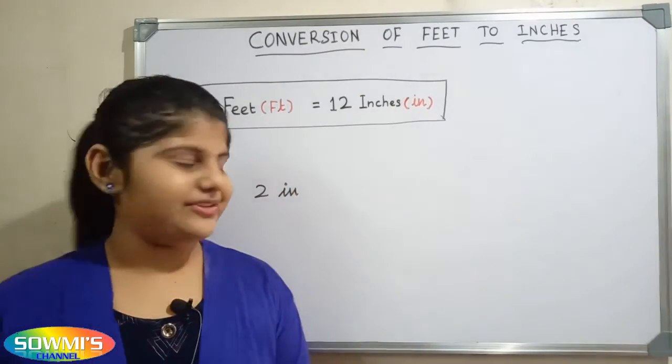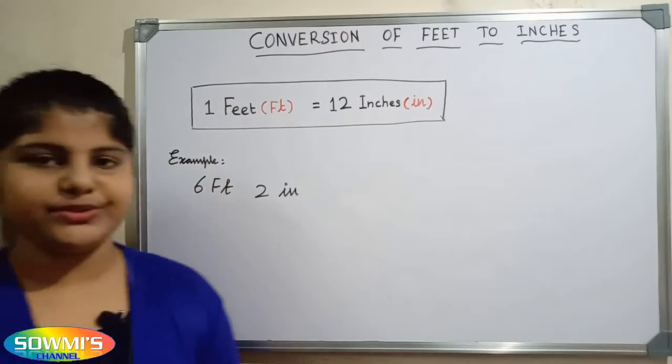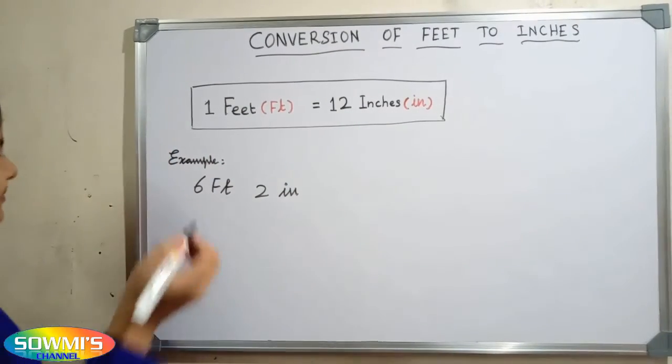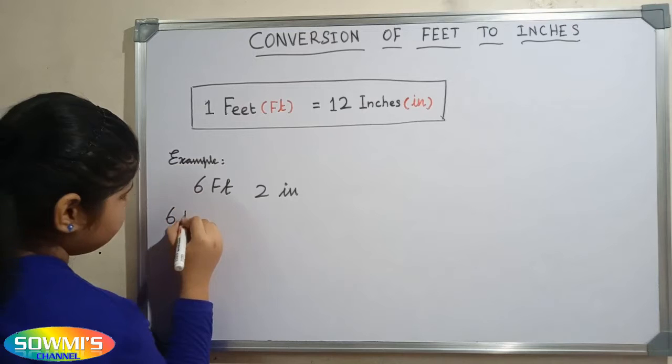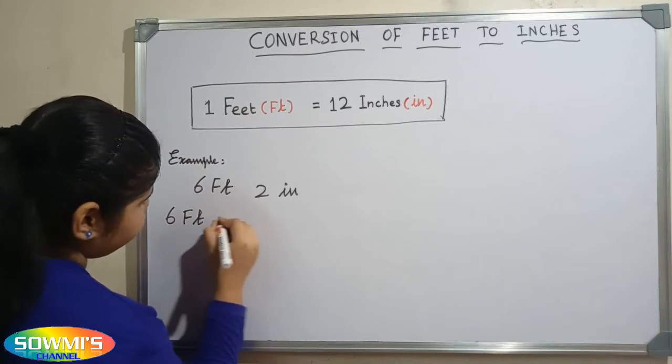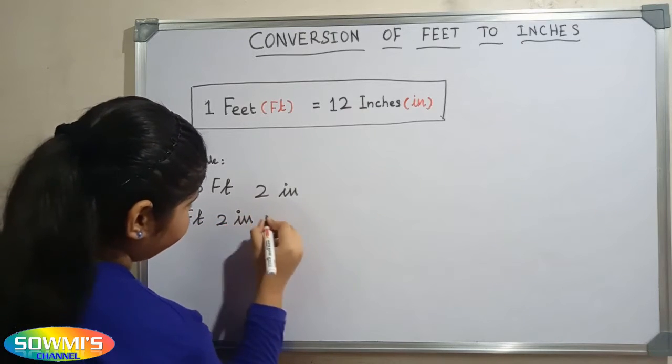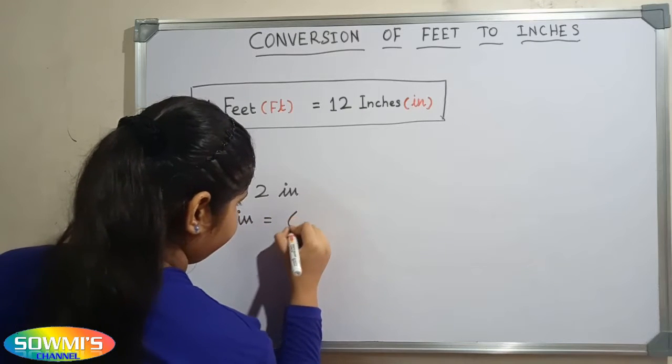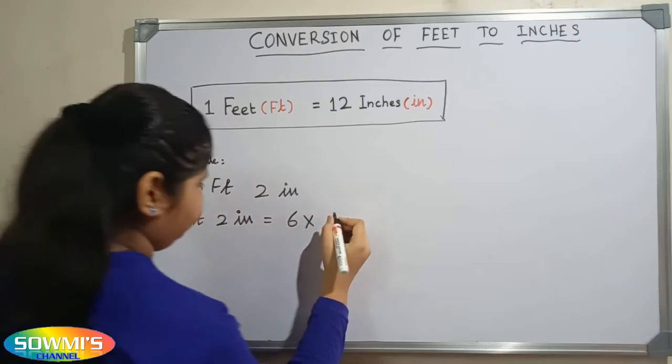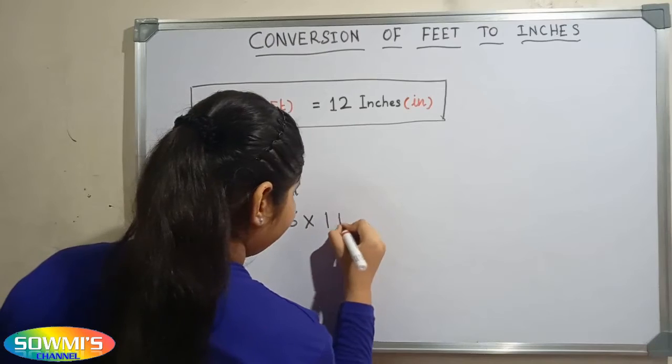First we have to convert 6 feet into inches, so 6 feet 2 inches is equal to 6 times 1 feet.